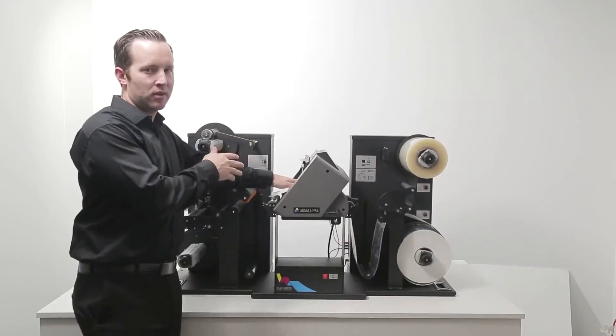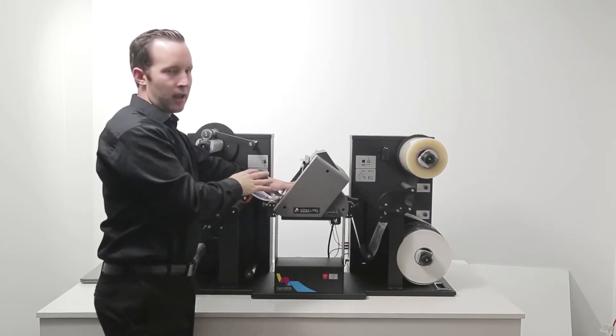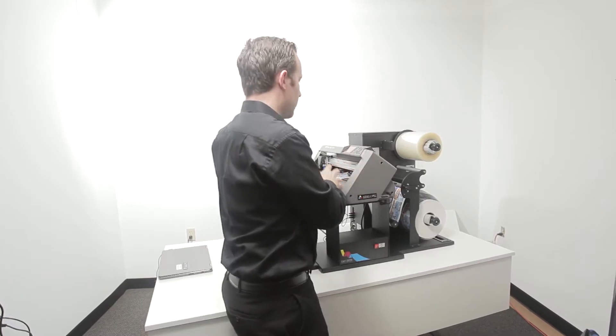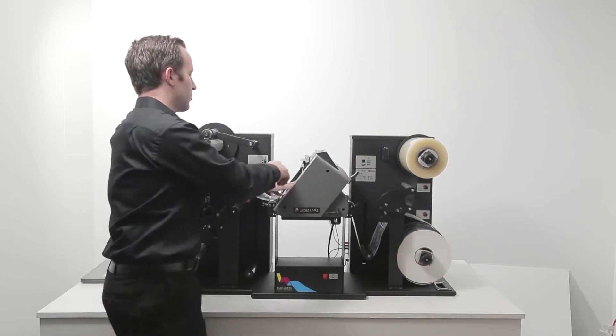Then adjust the pinch roller to the media width. Rollers cannot be over the edge of the media and cannot overlap the cut lines. Lock it in place with this lever and press number two on the control panel.